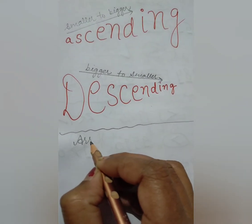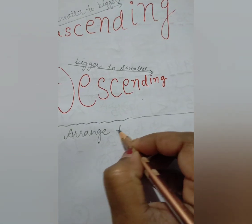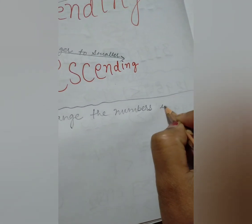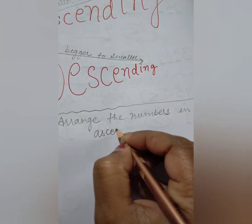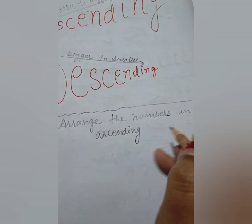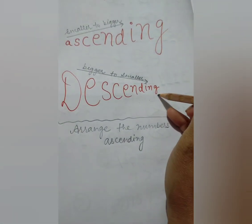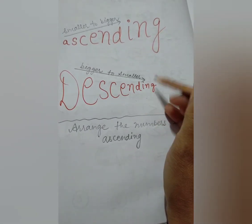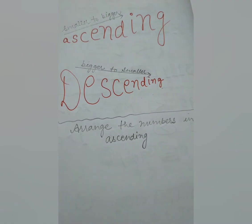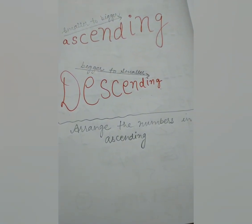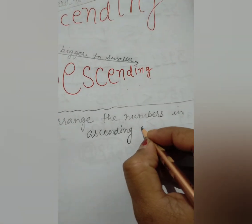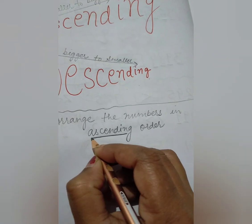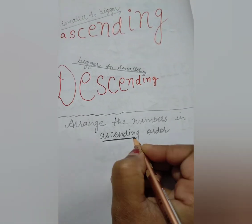The heading is: arrange the numbers in ascending order. The spellings of ascending and descending should be clear to you, because many students are confused while writing these spellings. So you should also write and learn these spellings carefully.